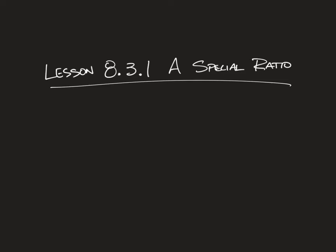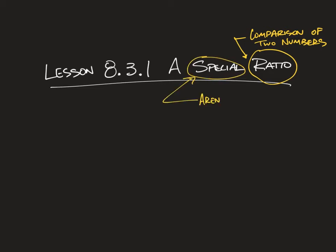Welcome back. This is lesson 8.3.1 from the CPM Geometry textbook. The title of the lesson is 'A Special Ratio.' A ratio is a comparison of two numbers — we often see that as a fraction, a decimal, or a percent. We're going to be talking about an extra special ratio.